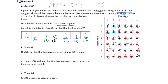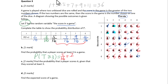For part B, find the probability that a player scores at least 3 in a game. We use T as the random variable, so we write P(T ≥ 3). We add all four probabilities together: 5/36 plus 7/36 plus 9/36 plus 11/36 equals 32/36, which simplifies to 8/9.